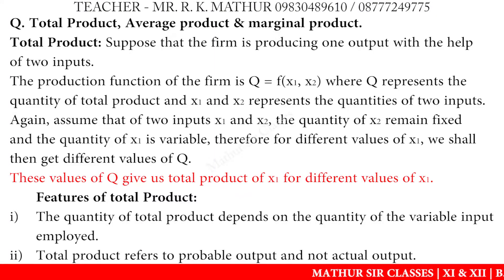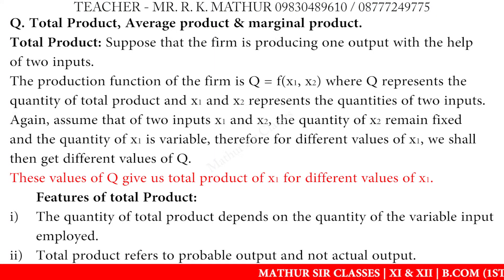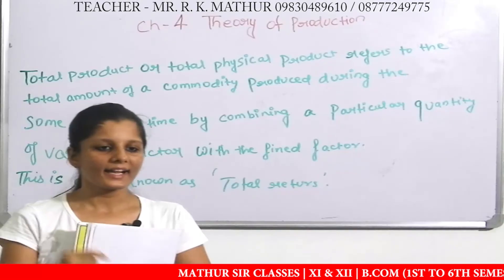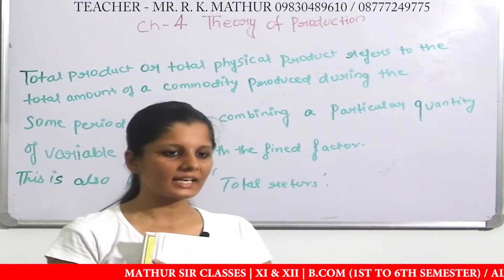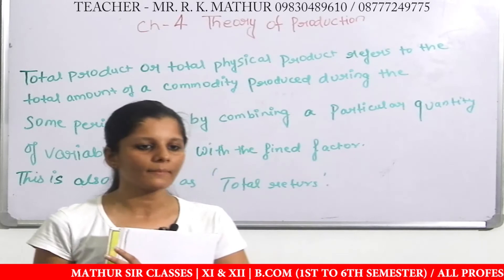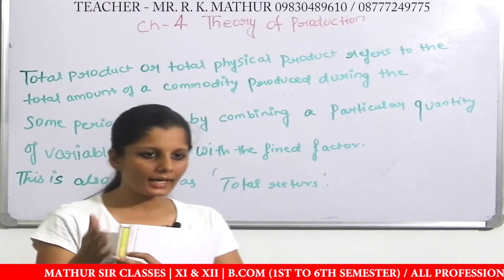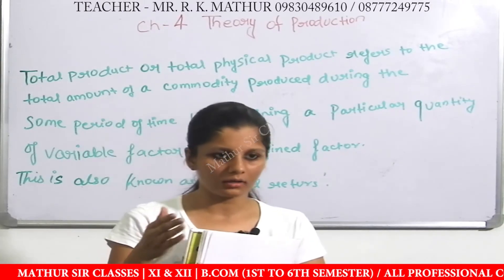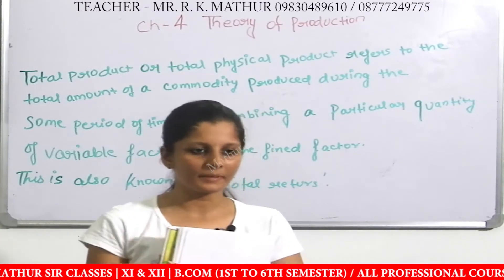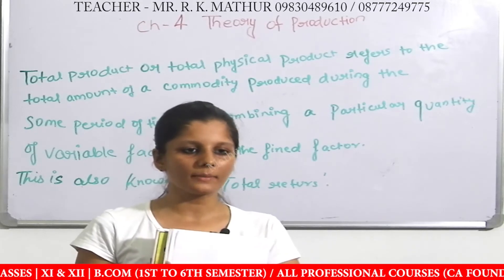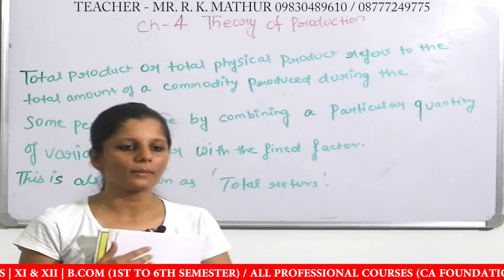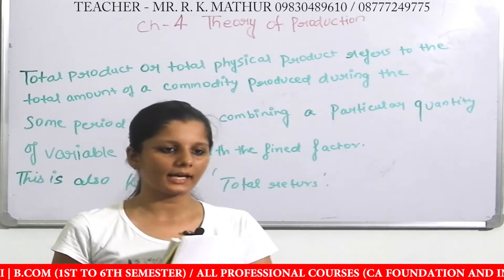These values of q give us total output for different values of x1. If we have different factors of production and we change them in different quantities, the quantity of output will also change accordingly.